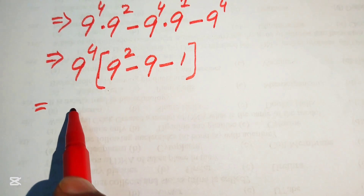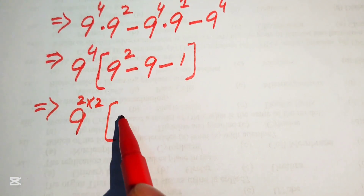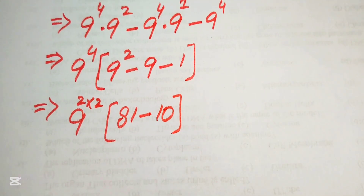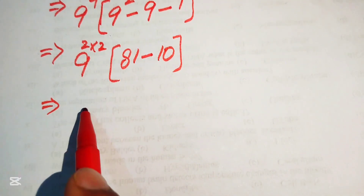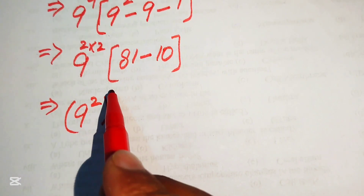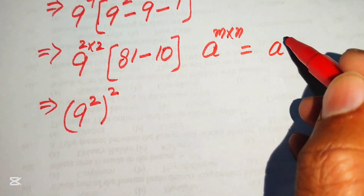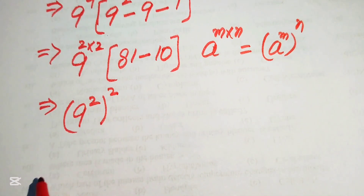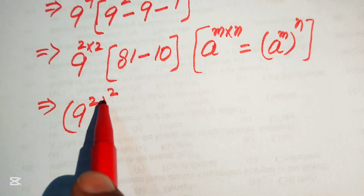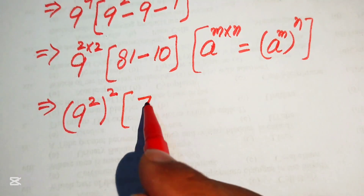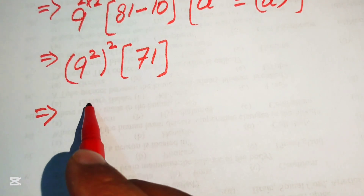For further simplification, we rewrite 9 to the power of 4 as 9 squared, whole squared. Inside the bracket: 9 squared equals 81, so we have 81 minus 9 minus 1, which equals 71. We also apply the exponent law a to the power of m times n equals a to the power of m, to the power of n, so 9 to the power of 4 becomes (9 squared) squared.